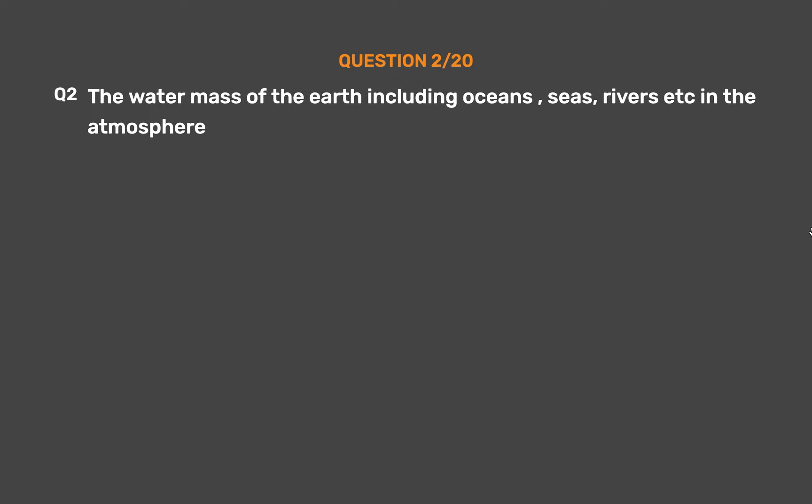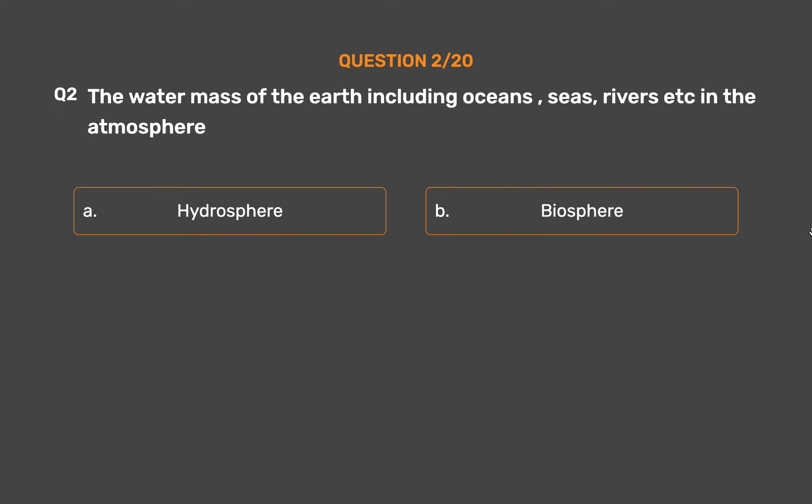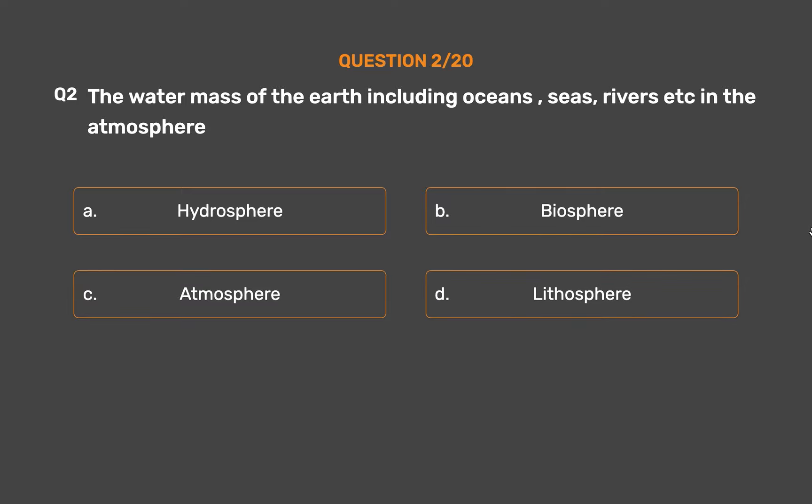Question Number 2. The water mass of the Earth including oceans, seas, rivers etc. is called — Option A: Hydrosphere. Option B: Biosphere. Option C: Atmosphere. Option D: Lithosphere.